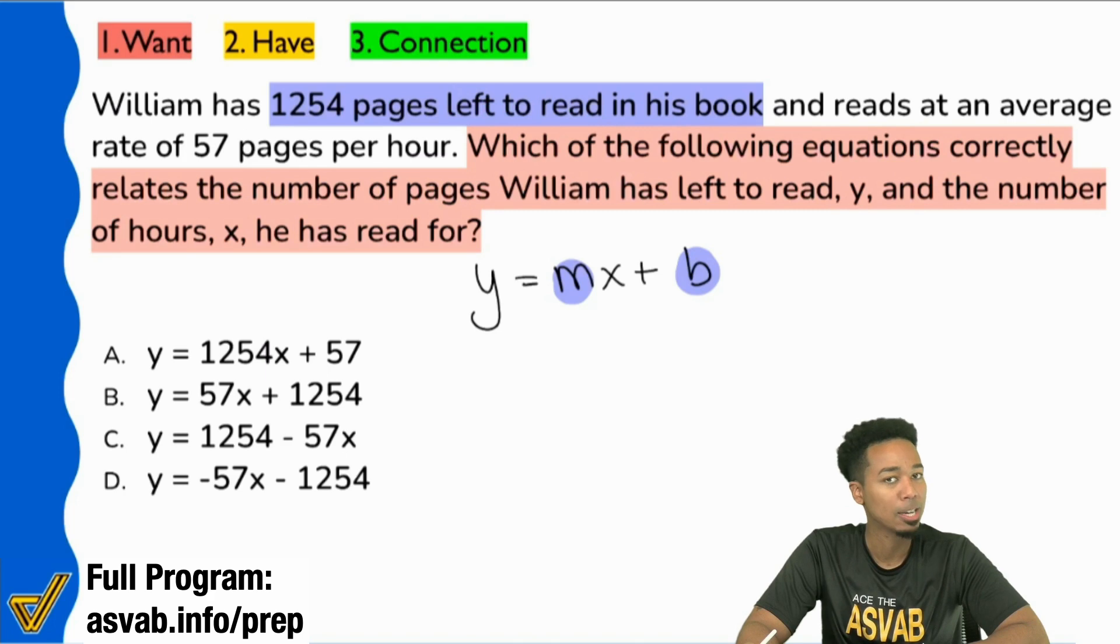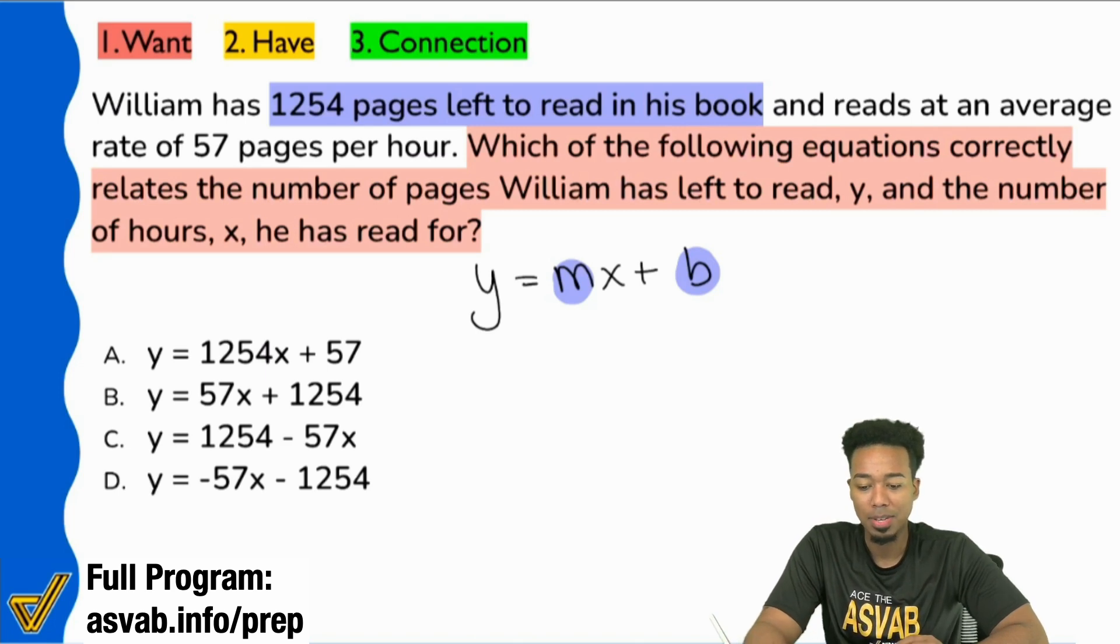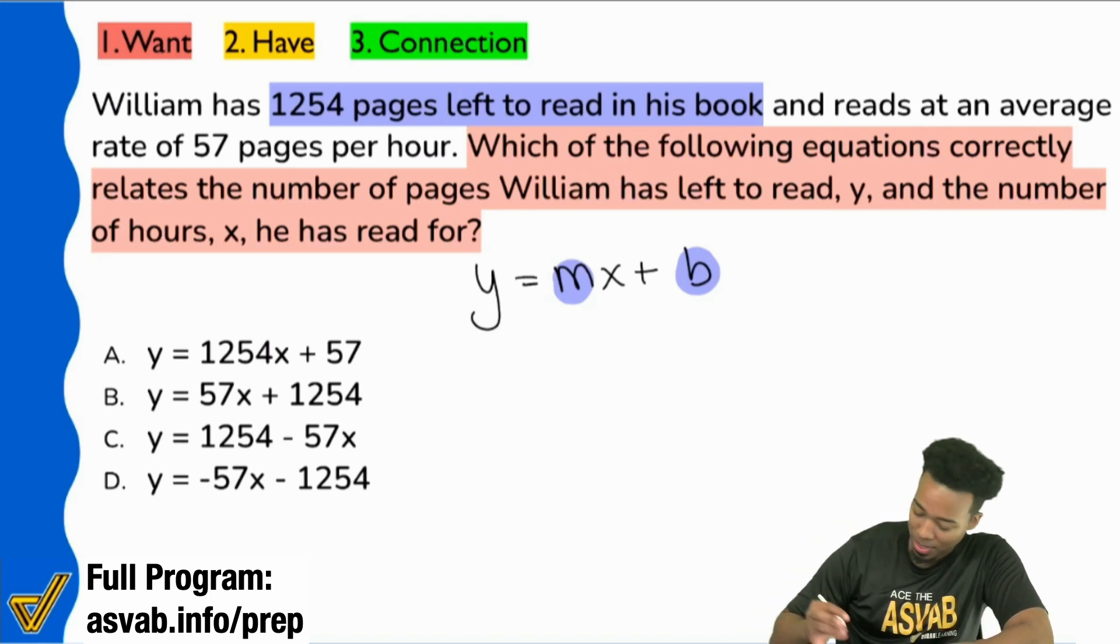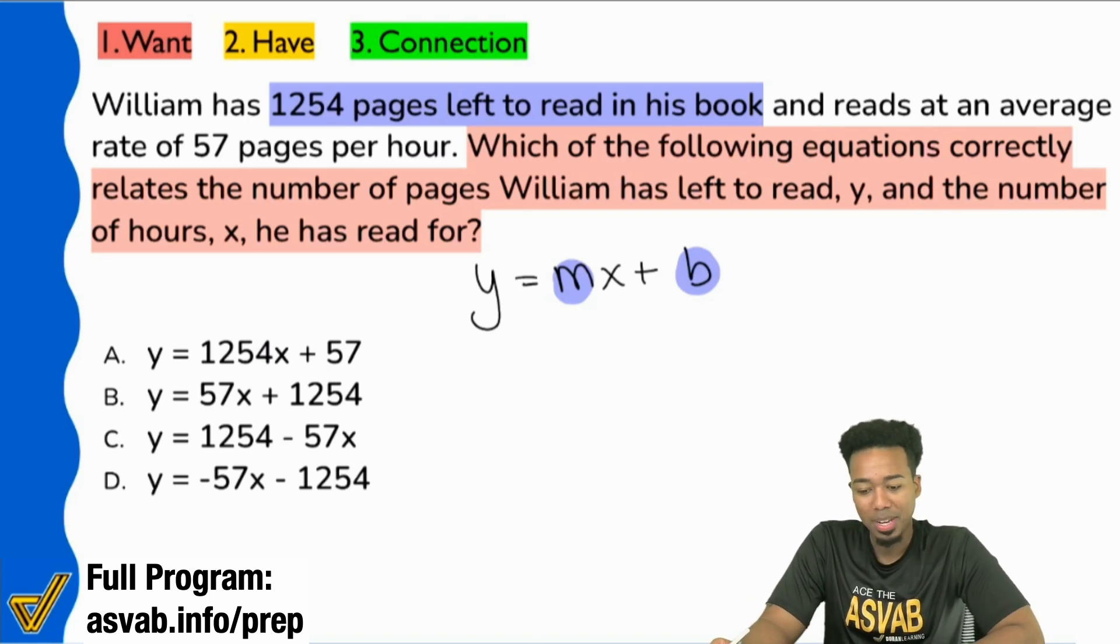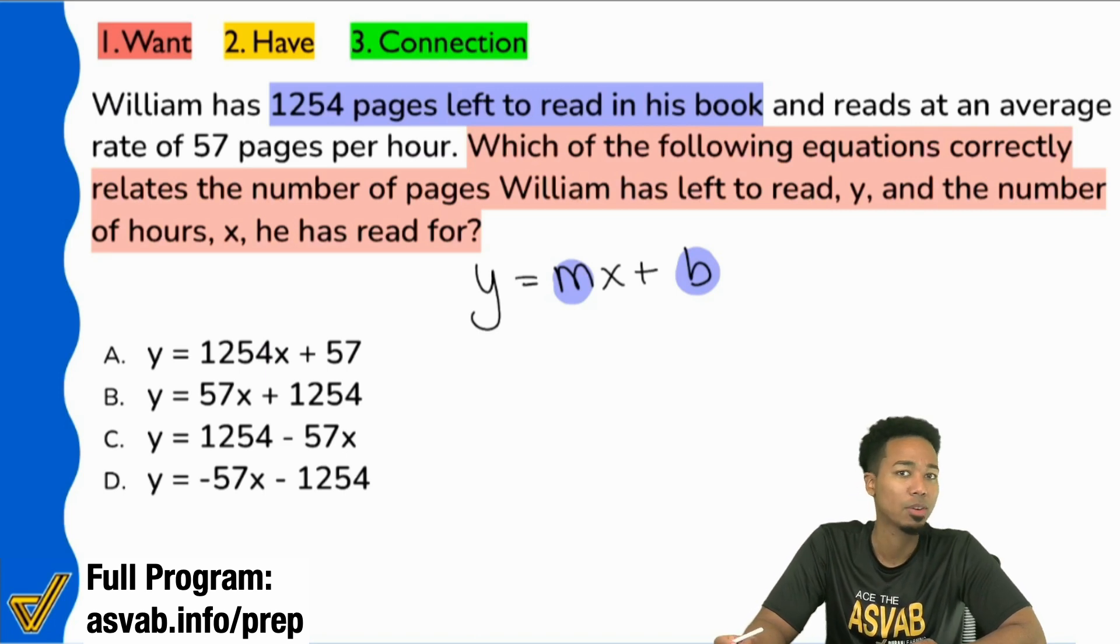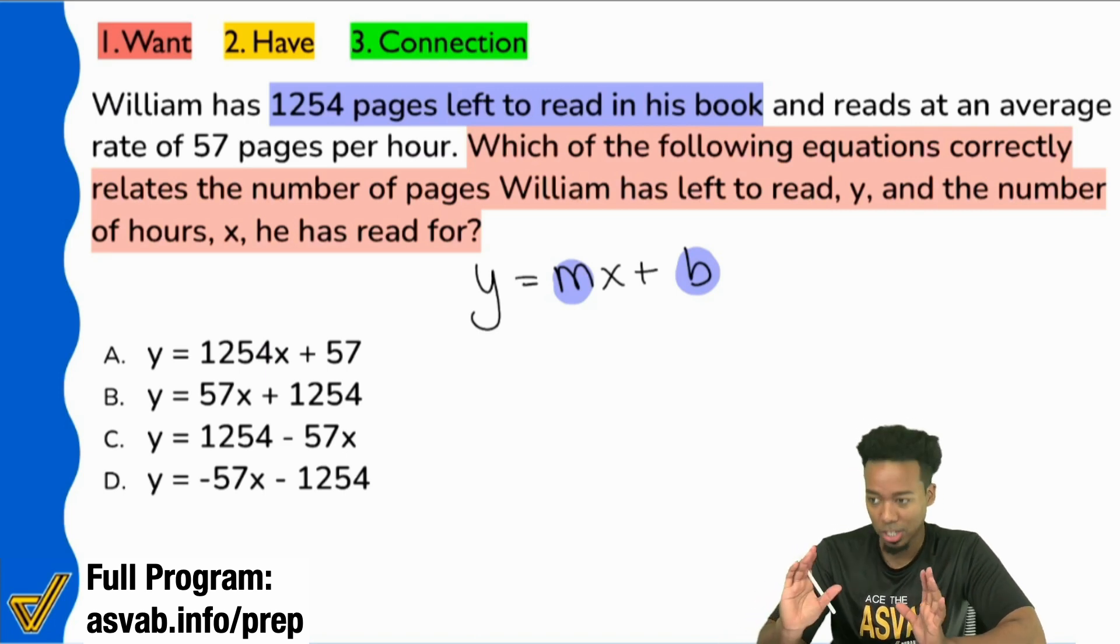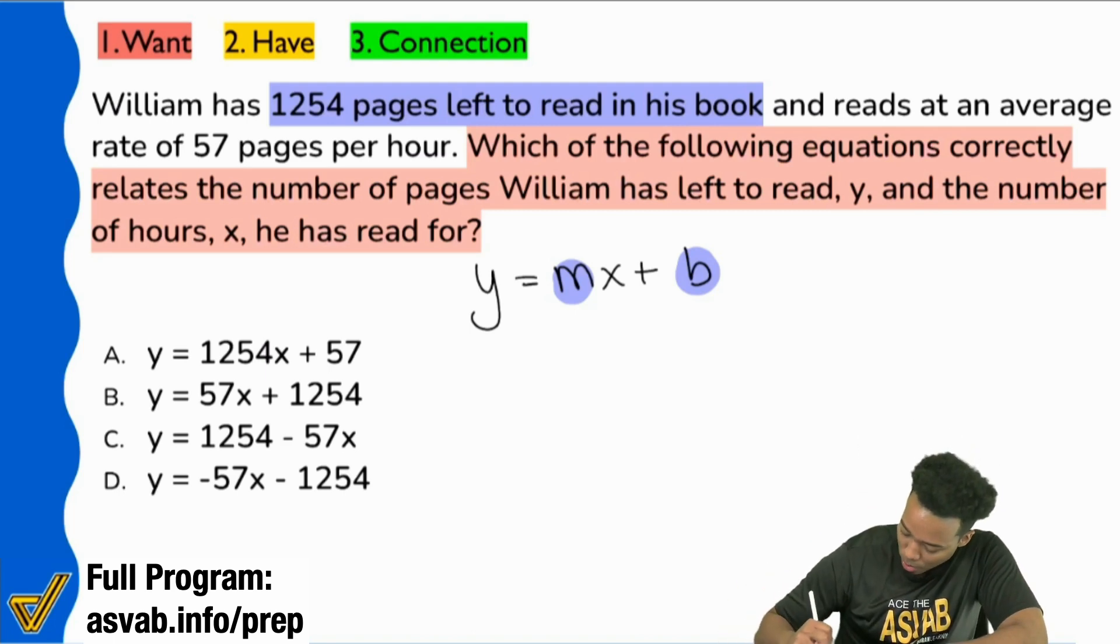What does it say first? It says William has 1,254 pages left to read in his book. Everybody, what would we consider that? Is that the beginning amount or is that the rate? That's your beginning amount. That's how many pages you have left. That is what is there from the start. So with that, let's make sure we write that down. So everybody, is that going to be a positive amount or a negative amount? No, that's a positive. That's a positive amount because you have an actual number of pages left to read. You can't have a negative number of pages left to read. You have a number of pages, a certain number, a positive number from the beginning. So you have 1,254 from the beginning and that's positive.